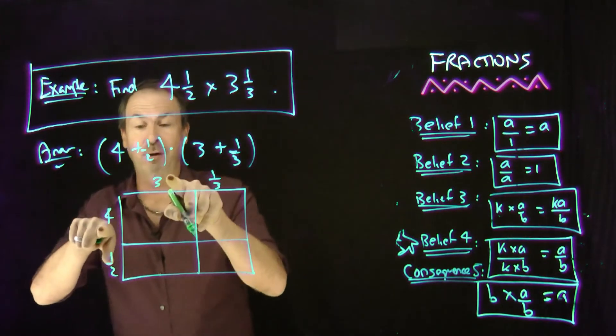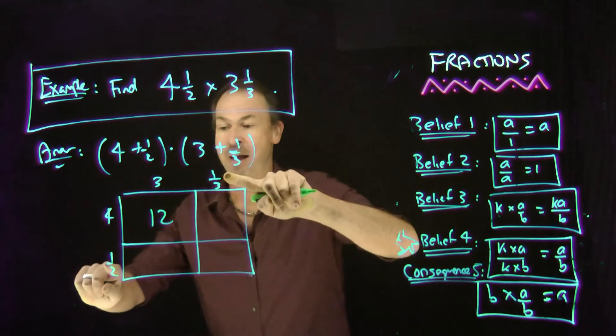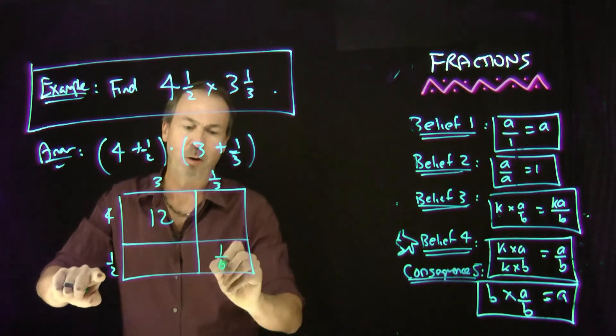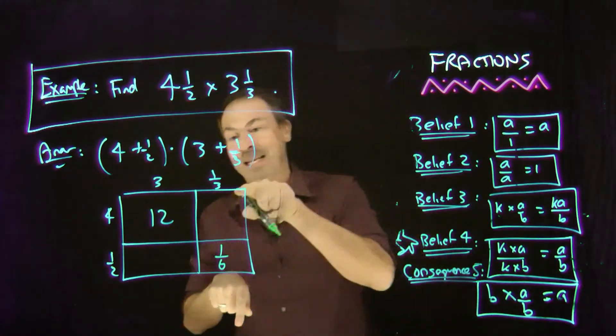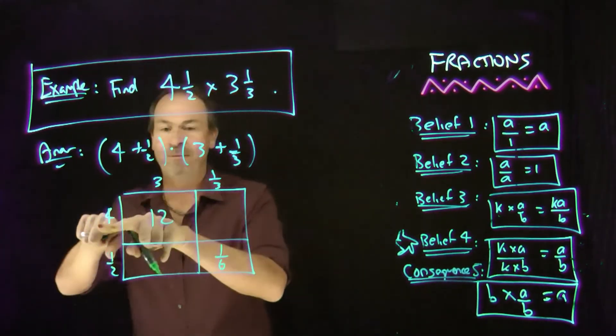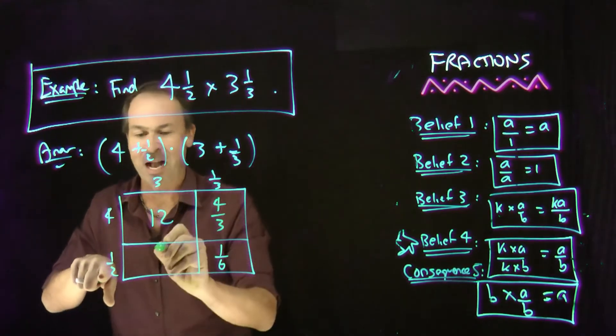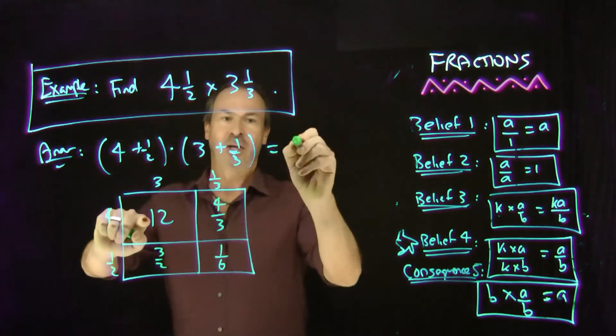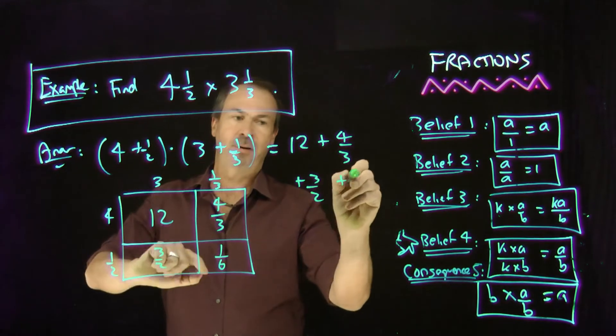Now, it's true. I do get a 4 times 3 piece. I do get 12. And I do get a half times a third piece. And I'm assuming we know how to multiply fractions now in our heads. That does indeed turn out to be 1 sixth. So that part was all correct. It was just missing more. It was missing this piece and this piece. 4 times a third is 4 thirds. And it was missing 3 times a half is 3 halves.